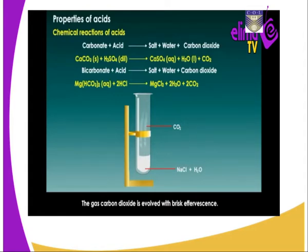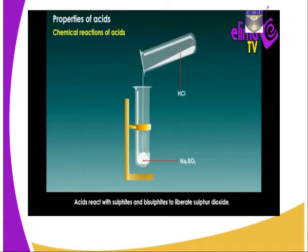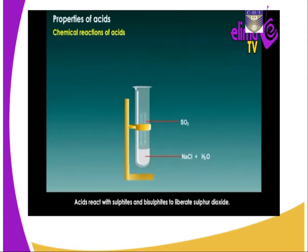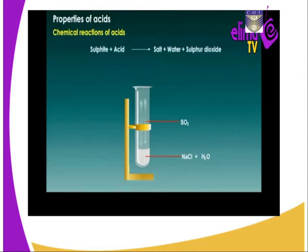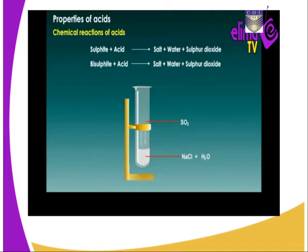What about the reaction of acids with sulfites? The reaction between an acid and a sulfite results in the formation of salt, water, and sulfur dioxide. There is effervescence, meaning there is production of gas, similar to the reaction with carbonates.